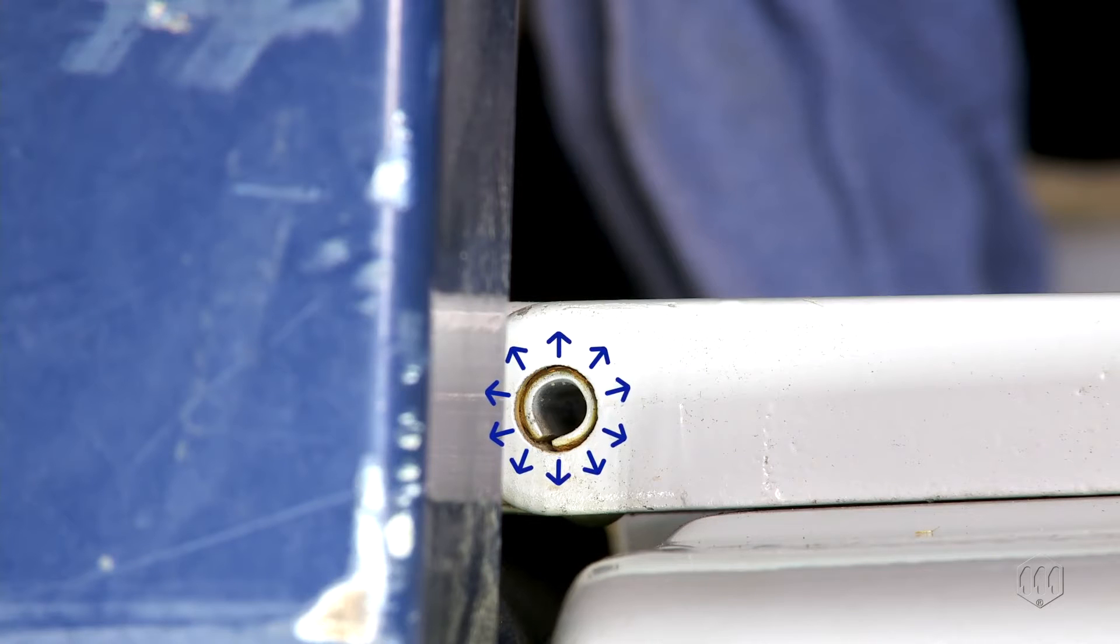It exerts pressure radially against the walls of the shaft to keep itself secure in place. The pin's diameter is slightly larger than the shaft, and the ends are rounded or chamfered to help the pin force its way in.